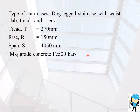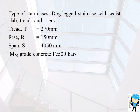Here we have the data for designing a staircase. The type of staircase is a dog-legged staircase with waist slab, threads and riser. Thread T is equal to 270 mm, rise is equal to 150 mm, span is equal to 4050 mm. We are using M20 grade of concrete and FE500 bars.